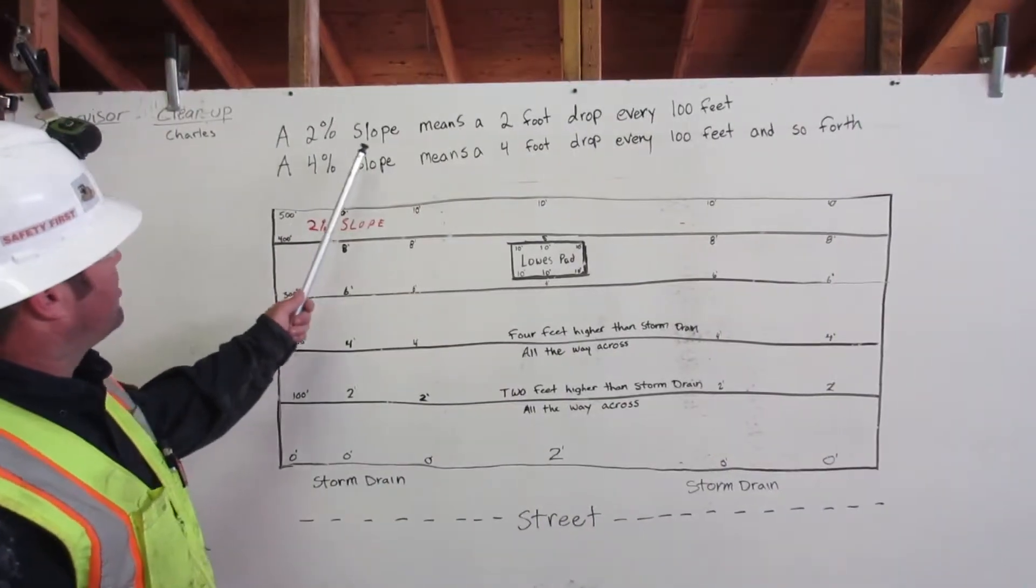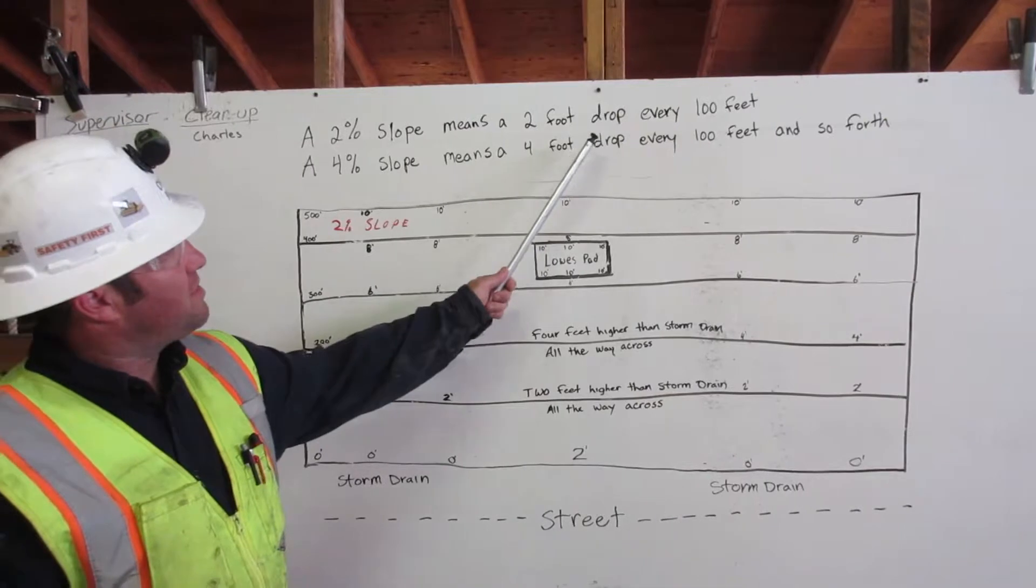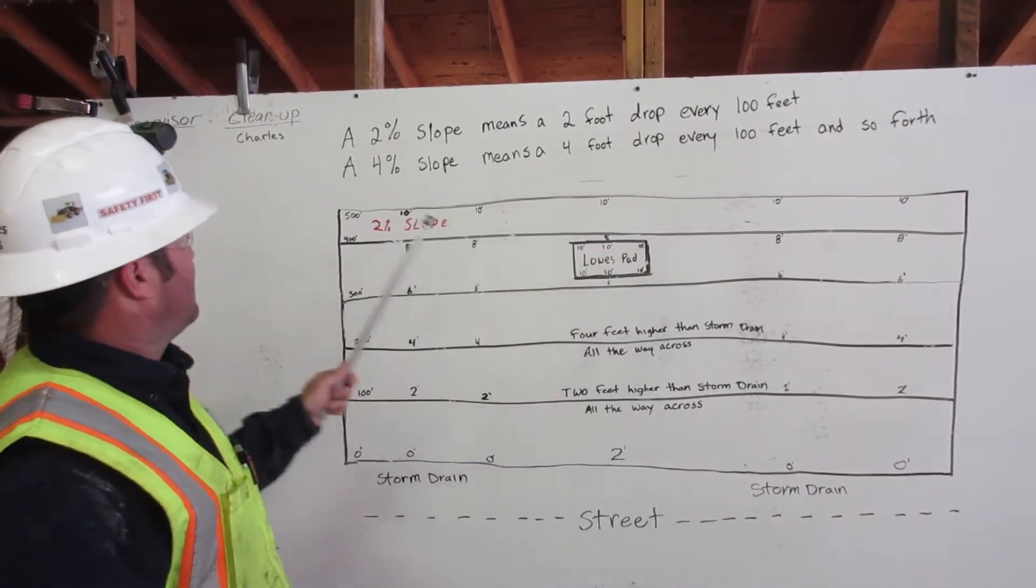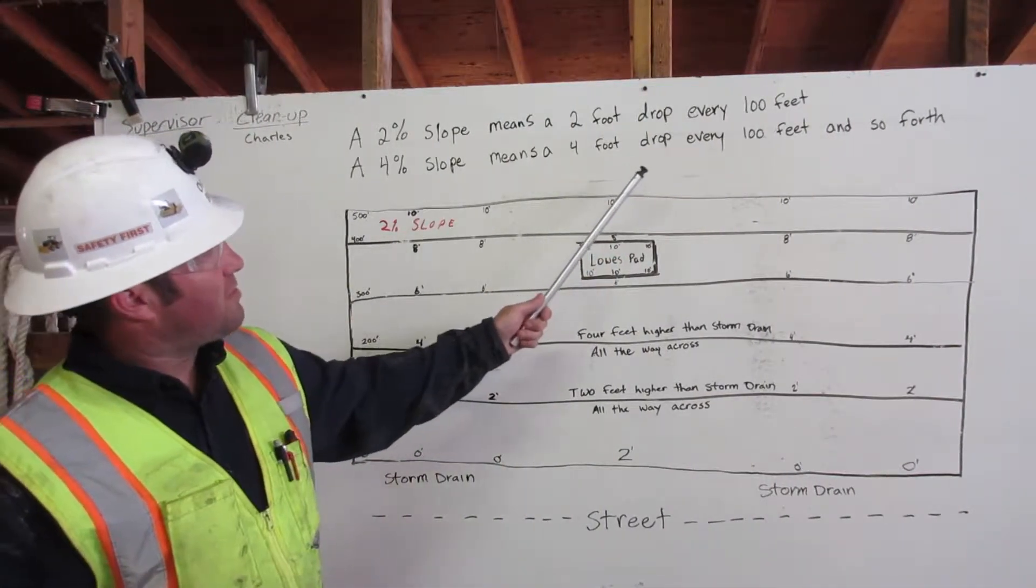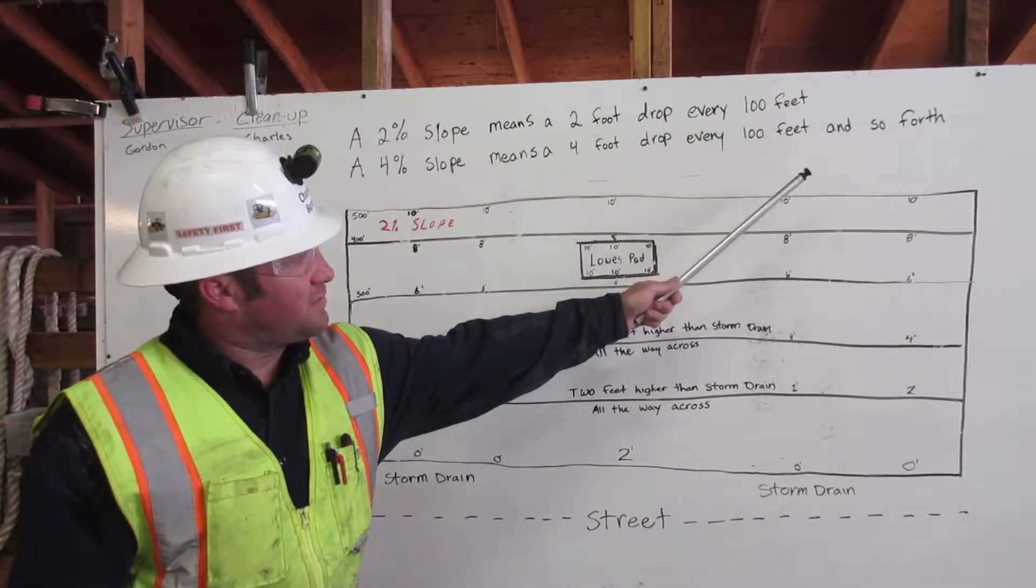A 2% slope means a 2 foot drop every 100 feet. A 4% slope means a 4 foot drop every 100 feet and so forth.